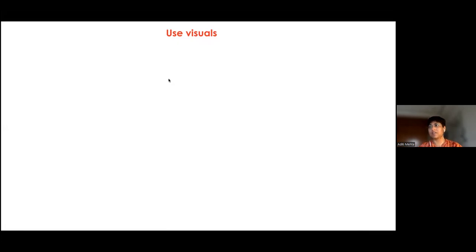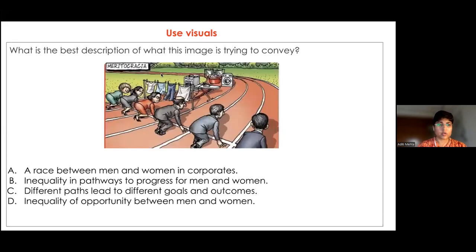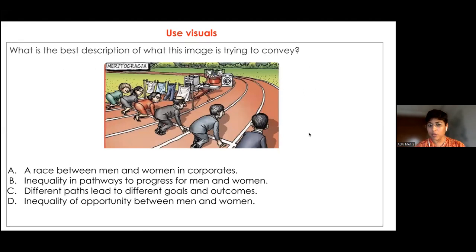Even if it's a printed assessment or a digital one, the use of visuals is a superb idea. For example, this visual became very popular when Anand Mahindra tweeted about it — it spoke about certain things that women have to face that men don't. It's a great way to see how critically children are able to think. When you give a picture and ask 'What is the best description of what this image is trying to say?' — you can transform lower order thinking tasks.